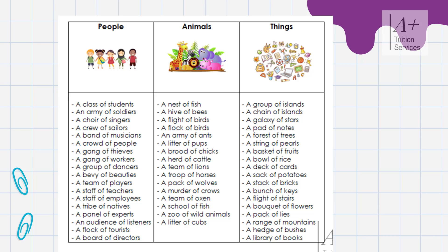Now we move on to animals. We have a nest of fish, a hive of bees, a flight of birds — or we can say a flock of birds. An army of ants. A litter of pups. A brood of chicks. A herd of cattle. A team of lions. A troop of horses. A pack of wolves. A murder of crows.